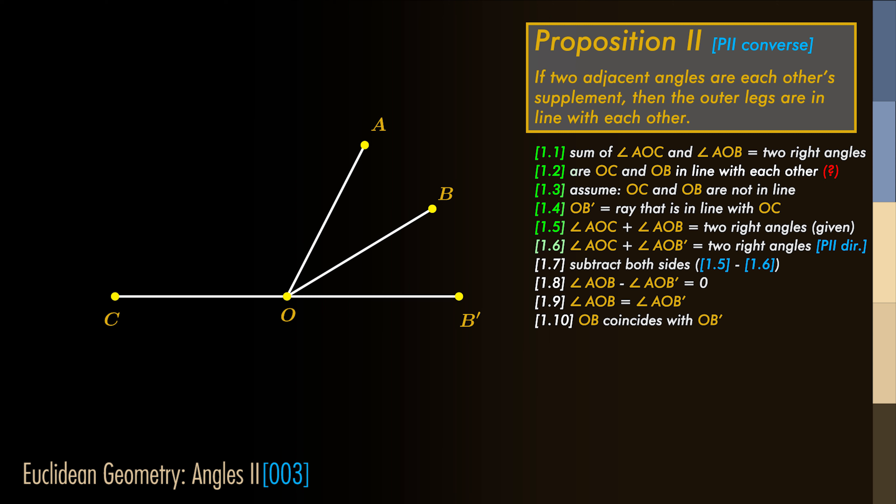The second one: by applying the direct proposition we can say that the sum of AOC and AOB' is equal to two right angles.